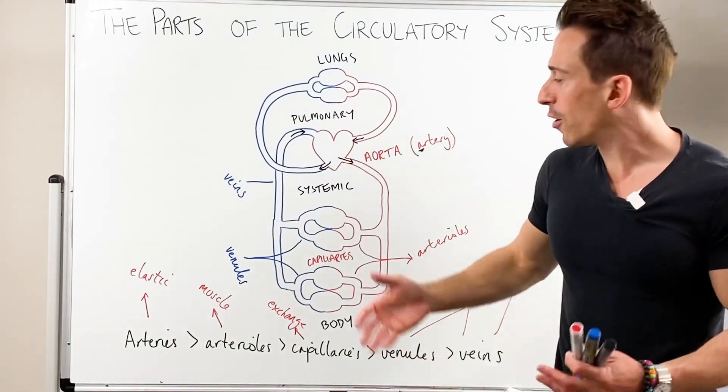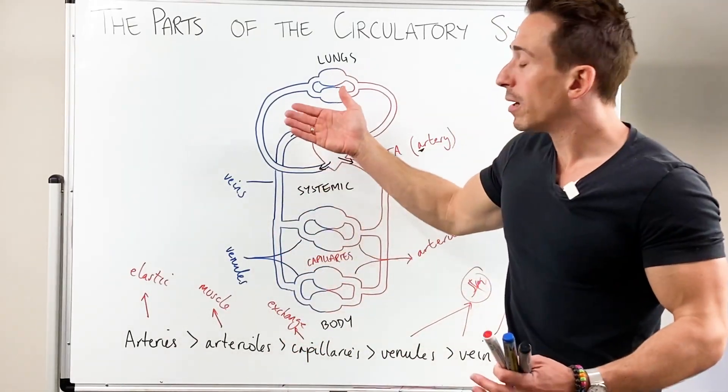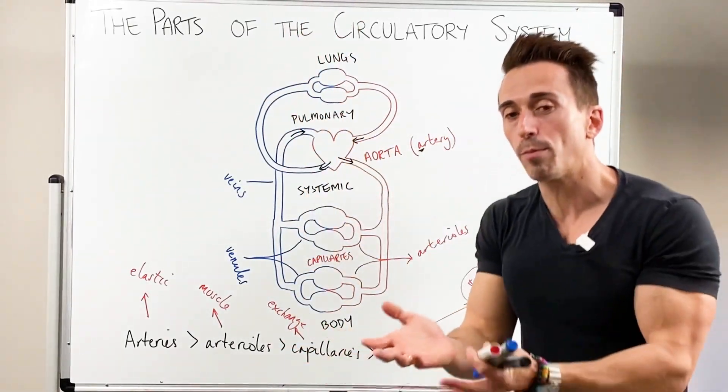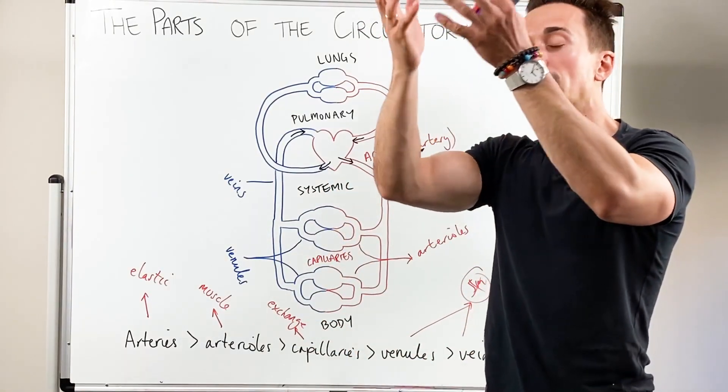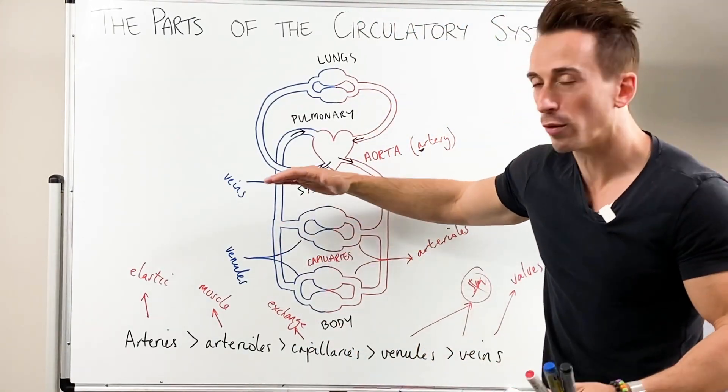That blood is going to want to fall back down the venules, back down the veins. So when the blood goes up, as it goes to fall down, it gets caught by these valves. And then the blood pushes back up again and then gets caught by another valve. And that's how the blood moves through.